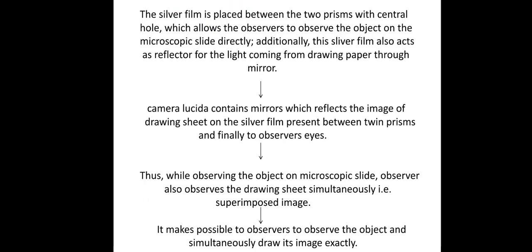The Camera Lucida contains two sets of prism arrangement. A silver foil is placed between the two prisms with a central hole, which allows the observer to observe the object on the microscopic slide directly. This silver foil also acts as a reflector for the light coming from the drawing paper through the mirror. The Camera Lucida contains a mirror which reflects the image of the drawing sheet onto the silver foil between the twin prisms and finally to the observer's eyes. Thus, while observing the object on the microscopic slide, the observer also observes the drawing sheet simultaneously, making it possible to draw its image exactly.